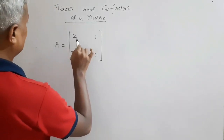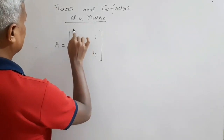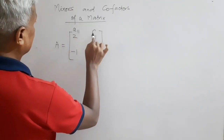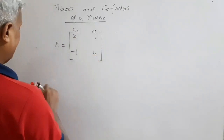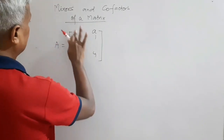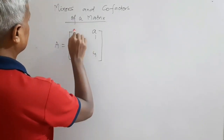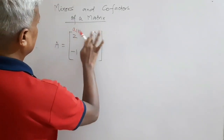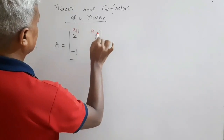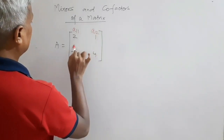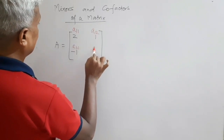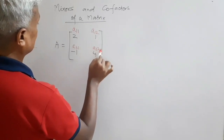You know that the element 2 is called A11 — A11 means first row, first column. So this is A11, this is A12, this is A21, and this is A22.